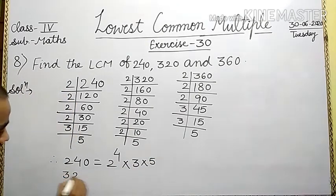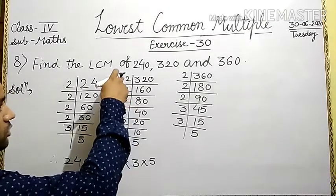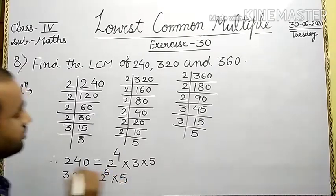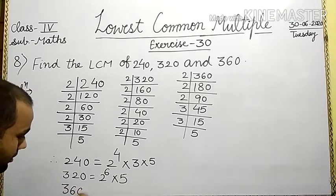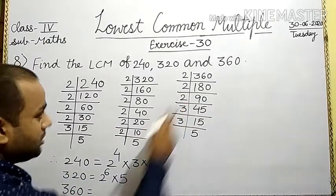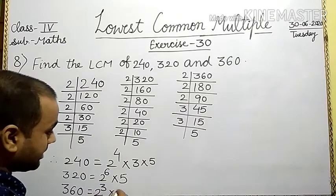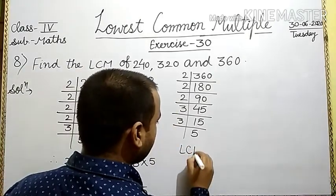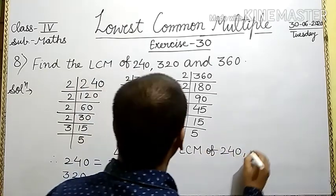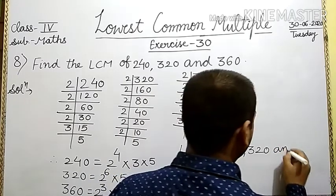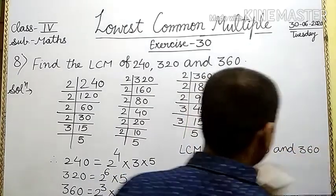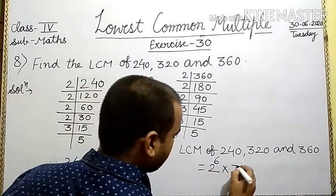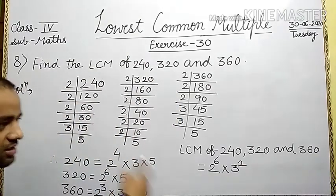Next number is 320. 2 occurs: 2 gives 160, 2 gives 80, 2 gives 40, 2 gives 20, 2 gives 10, 2 gives 5 — that is 6 times. So 320 is equal to 2 to the power 6 into 5. For 360: 2 occurs 3 times, 3 occurs 2 times, and 5 occurs 1 time. So 360 is equal to 2 to the power 3 into 3 squared into 5.